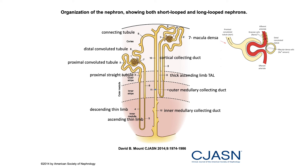Number six is the thick ascending limb, or TAL. This is a very important segment of the nephron — it is virtually impermeable to water, so water does not get absorbed here. We're going to mention the TAL a lot throughout this book. The vasa recta, all the blood vessels around the limb of Henle, are in that hairpin area and play a pivotal role in the countercurrent mechanism — the mechanism by which the kidney can concentrate the urine, concentrating urea toward the inner medulla.